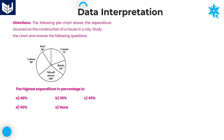Question 3: the highest expenditure in percentage. Just by observing the diagram, it is clear that 108 is the highest value, since the remaining values are 36, 72, 54, and 90. If a value has the highest degrees, it automatically has the highest percentage.